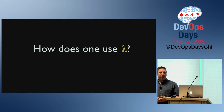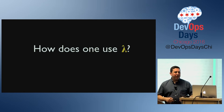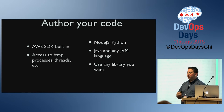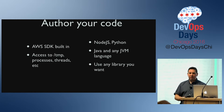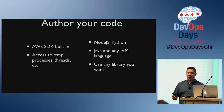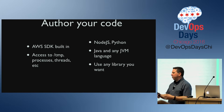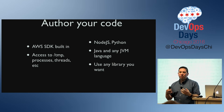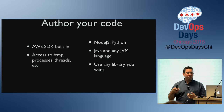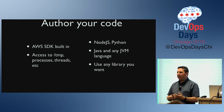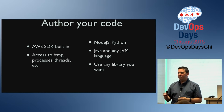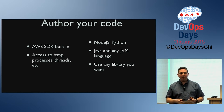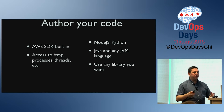How do you use Lambda? Basically, you have to write your code. They give you an SDK — you can use Java, Python, and there are ways to use other languages as well with a shim.